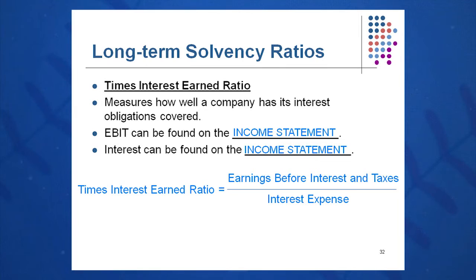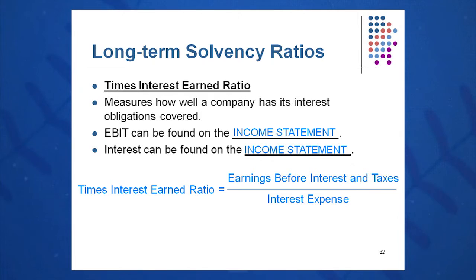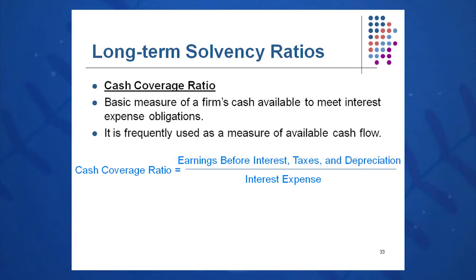Times interest earned is another long-term solvency ratio measuring how well a company covers its interest expense obligations. It's EBIT — earnings before interest and taxes — divided by interest expense, both from the income statement. Essentially, do we have enough EBIT to cover interest expense? Cash coverage is similar: EBIT plus depreciation divided by interest expense. Depreciation is added back because it's a non-cash expense. For memorization, focus on long-term debt-to-equity plus one of the first three — such as total debt-to-equity.